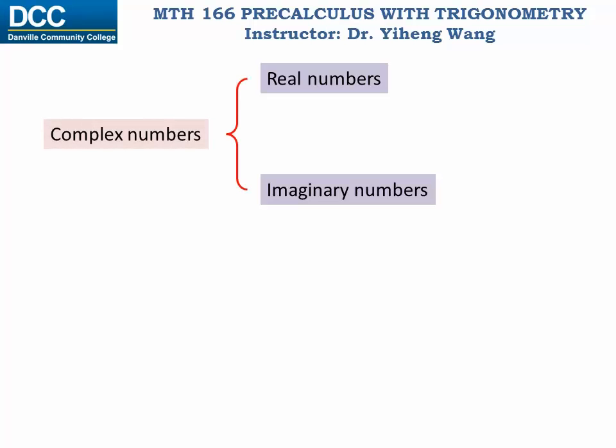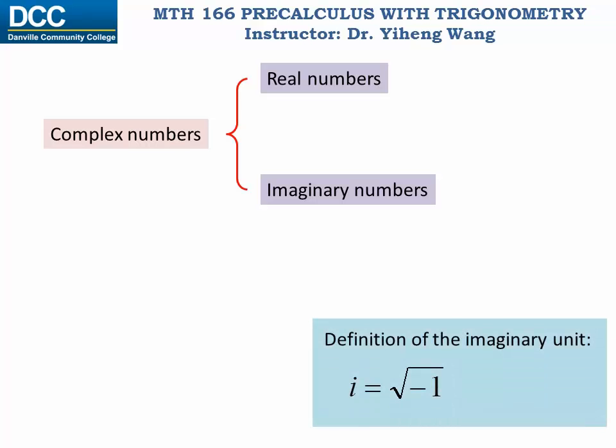But in order to do that, we need to first define the imaginary unit. For real numbers, the unit number is one. For imaginary numbers, the unit number i is defined as the square root of negative one. In other words, i squared equals negative one.